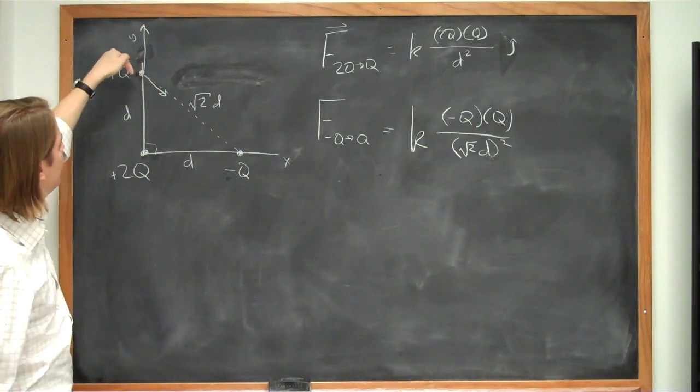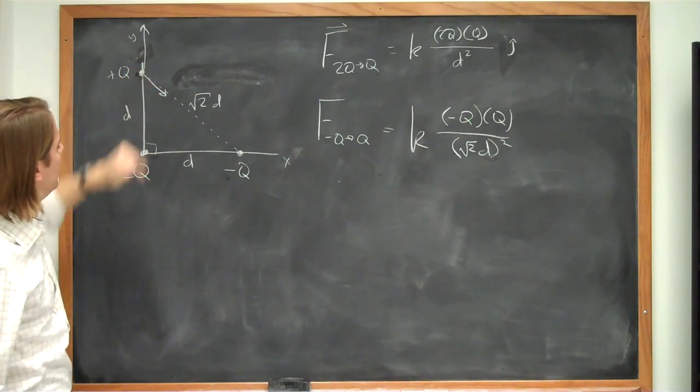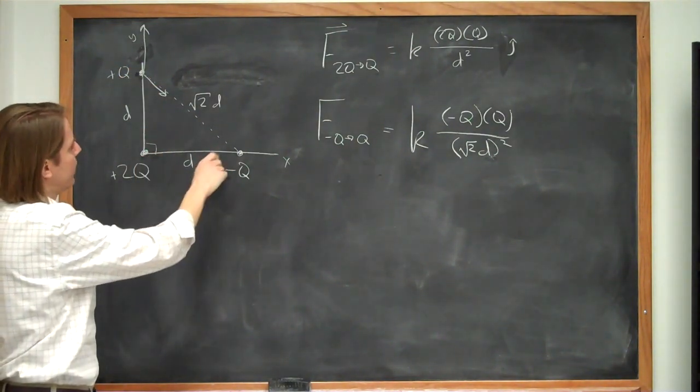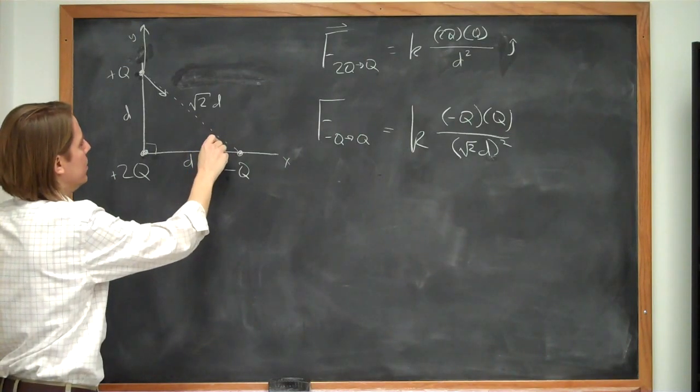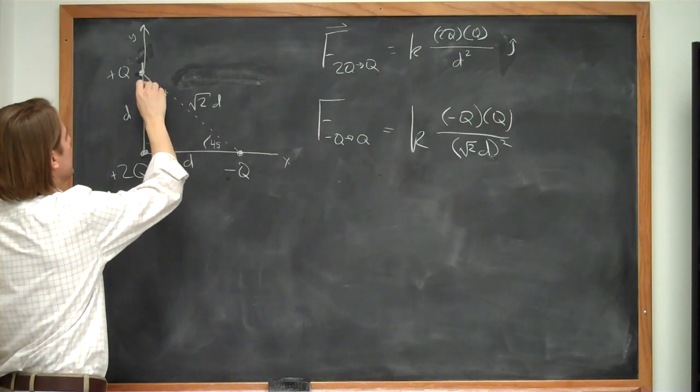So we need the x component of this and the y component of this. So we can get that because not only is this a right triangle, but it's equilateral. So we know this is 45 and this is 45.